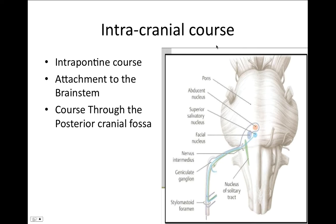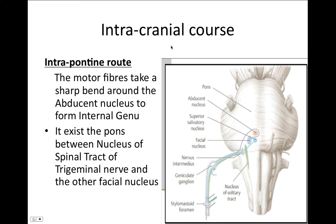The intracranial root has three parts: the intrapontine part, the attachment to the brainstem, and the course to the posterior cranial fossa. Within the pons, the motor fibers take a sharp bend which forms the internal genu. This bend exists in the pons between the nucleus tractus solitaris and the trigeminal nerve nucleus.